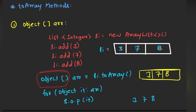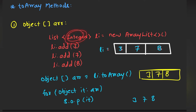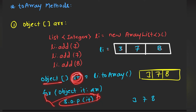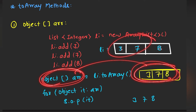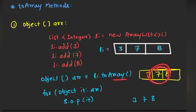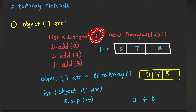Here I declared the object array — why? Because this basically contains an object called Integer, which is not a primitive data type. Therefore I need an object data type. I declared the name of my object array as arr and simply used a for-each loop to print the values. When this object gets converted, it will look like 3, 7, and 8. This is my object array after executing this line.